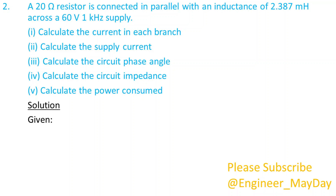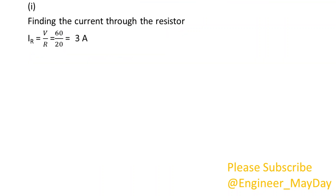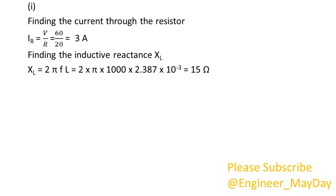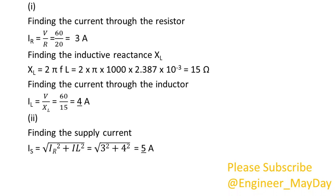Given: R equals 20 ohms. L equals 2.387 times 10 to the power negative 3 henry. V equals 60 volts. F equals 1000 hertz. 1. Finding the current through the resistor — IR equals 3 amperes. Finding the inductive reactance XL — XL equals 15 ohms. Finding the current through the inductor — IL equals 4 amperes. 2. Finding the supply current — IS equals 5 amperes.